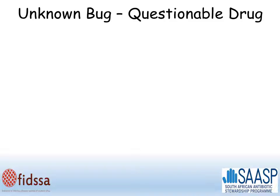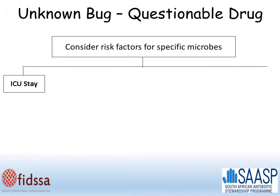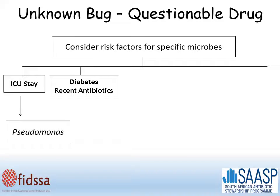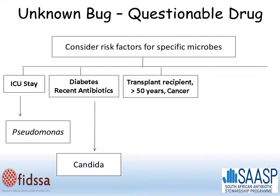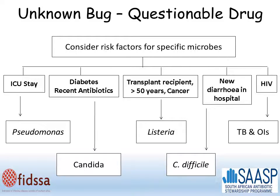Things get really difficult when you have an unknown bug and a questionable drug — that is to say, your patient's deteriorating on your empiric therapy and none of your cultures are helpful. First, consider everything on the previous slide because it's possible that you do have the right drug for the right bug. But in addition, you need to think about risk factors for other microbes that you may not be covering. Examples include a patient in an intensive care unit who could have a pseudomonas infection, a patient with diabetes or recent antibiotics who may have a fungal infection such as candida, patients who are immunocompromised or of older age who may have listeria, anyone in hospital with new diarrhea who might have Clostridium difficile, and patients with HIV who might have tuberculosis or other opportunistic infections.